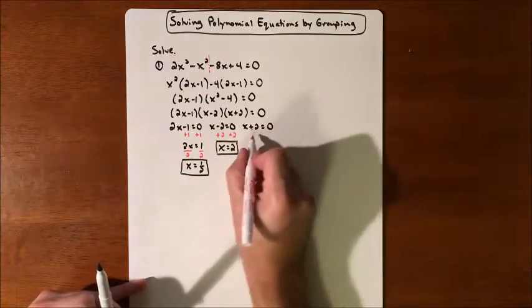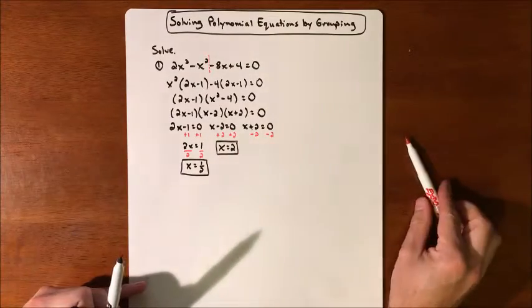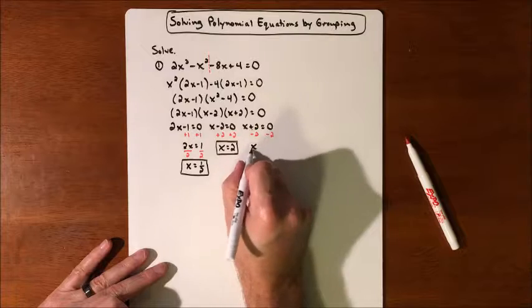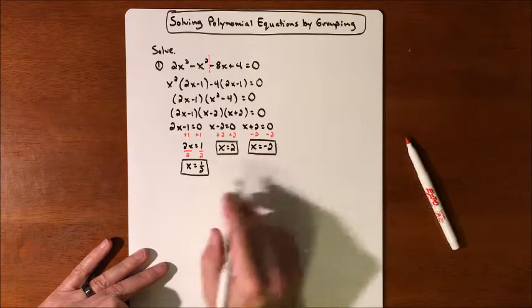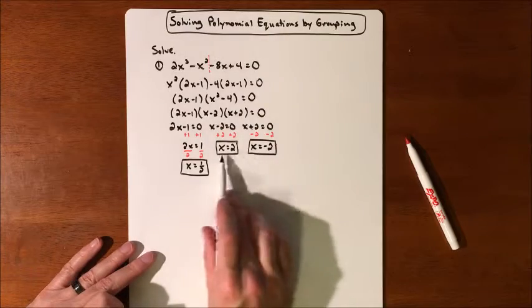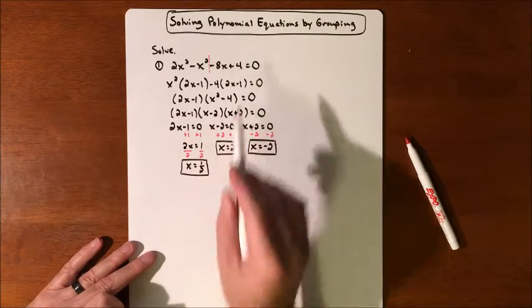And we will subtract 2. x equals negative 2. So we get three solutions out of this. We can take those values, plug it back in, and it should all add up to 0.